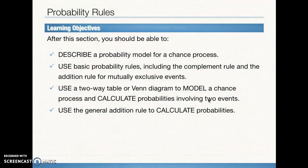We have a few different objectives here. First, describe a probability model for a chance process. Second, use basic probability rules, including the complement rule and the addition rule for mutually exclusive events. Third, use a two-way table or Venn diagram interchangeably to model a chance process and calculate probabilities involving two events. And fourth, use the general addition rule to calculate probabilities.